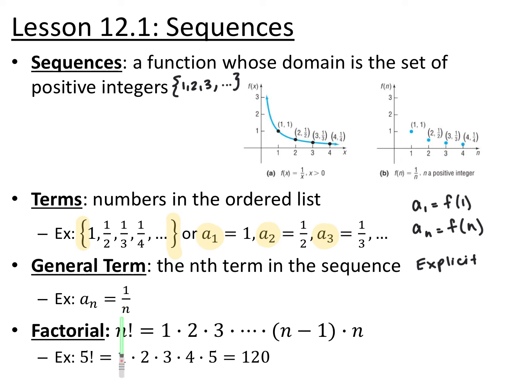This notation here — an exclamation point in math — means factorial. So n factorial means multiply every integer from 1 up to that value together. So n factorial would be 1 times 2 times 3 all the way up times n. So for example, 5 factorial would be 1 times 2 times 3 times 4 times 5, which is 120.